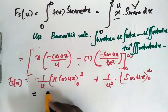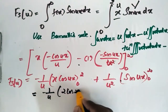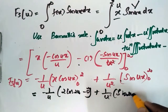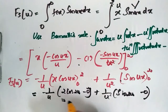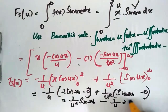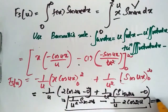This simplifies to: minus 1/u into (2·cos(2u) minus 0) plus 1/u² into (sin(2u) minus 0). Therefore, fs(u) equals 1/u²·sin(2u) minus 2/u·cos(2u).